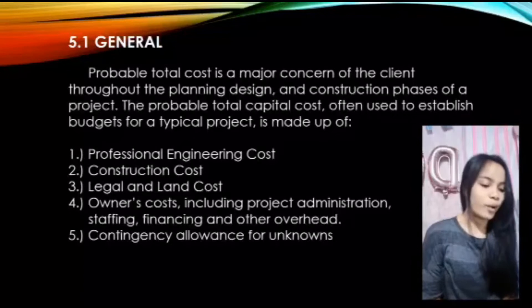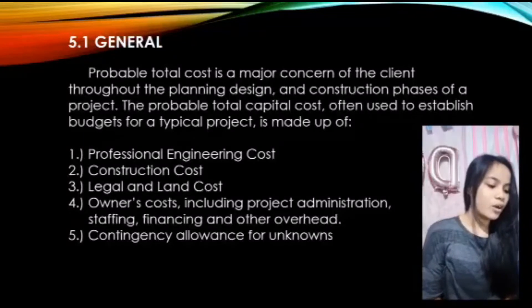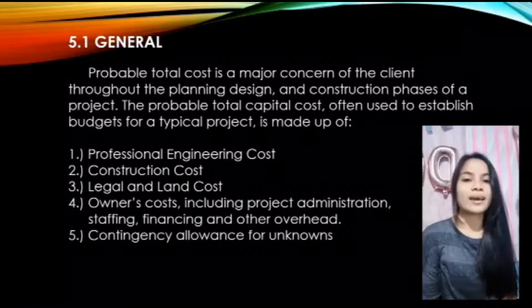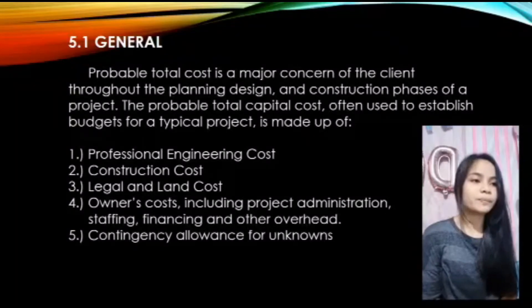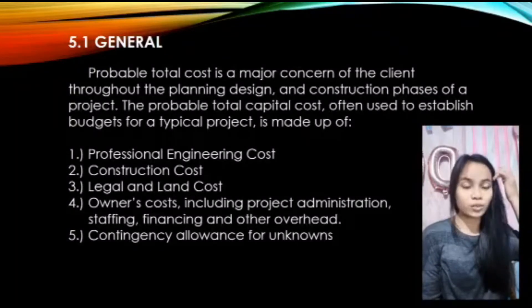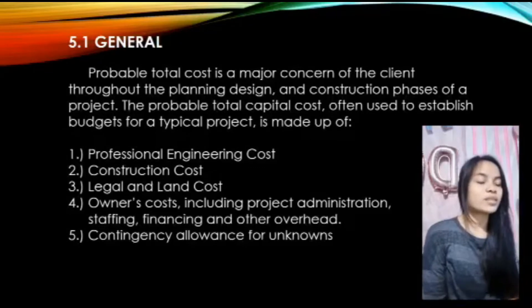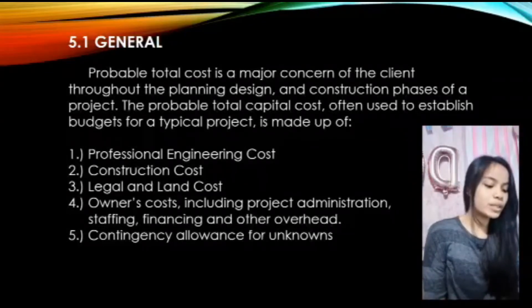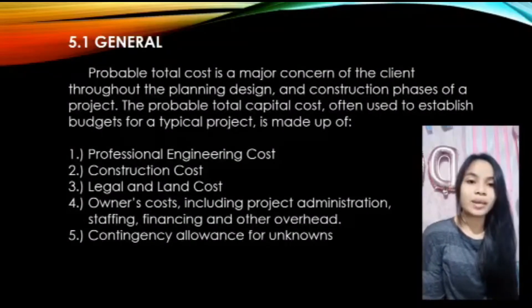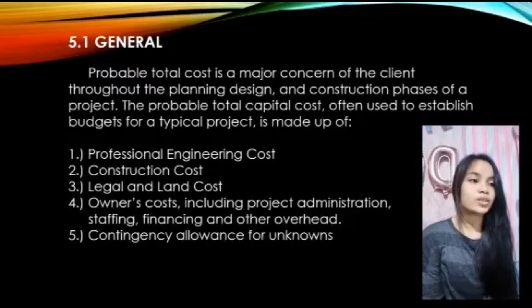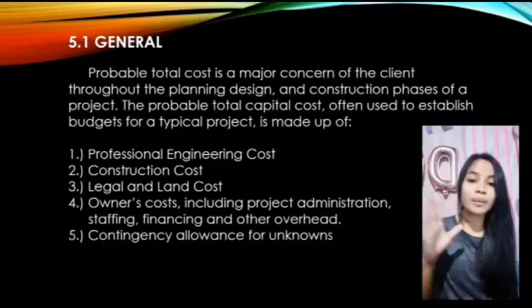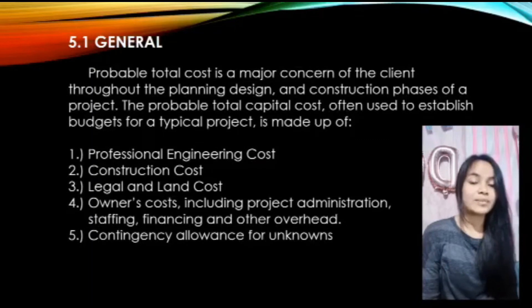So sa number three and four, it covers the probable total project cost like sa lupa and the interest for the borrowed money. So sa number five, the last one, contingency allowance for unknowns — it is the money allotment for the emergencies that might occur during the construction projects. So itong limang parts na to will be further discussed by my group mates. Hope you'll watch the video till the end.